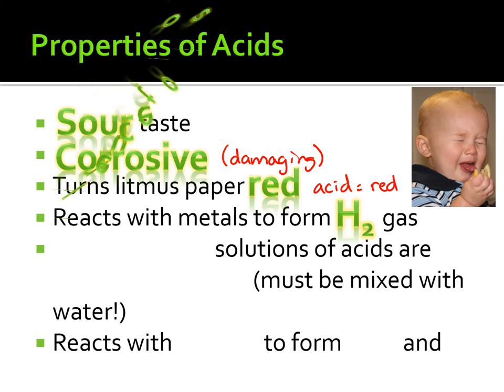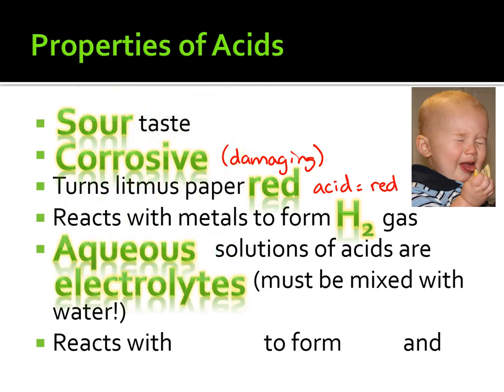The next bullet is that aqueous solutions of acids are electrolytes. All I want you to write down is that acids are electrolytes — that's the key word. It's because they have mobile or free ions: the free hydrogen ion and whatever negative ions were released when broken down by water. Those charged particles can move around in solution, and their ability to move around allows them to conduct electricity. So as long as acids are dissolved in water, they are considered electrolytes.